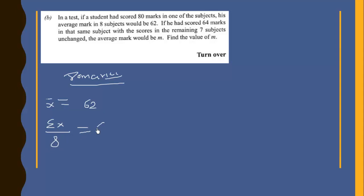And this gave us 62. So if we are looking for the total mark that he scored before we divide it, then we should multiply it through by 8. So sigma x would be equal to 8 times 62, and this will give us 496 total marks.